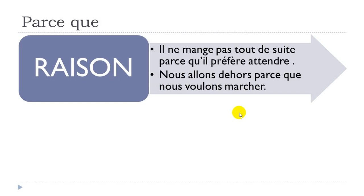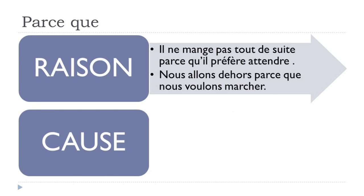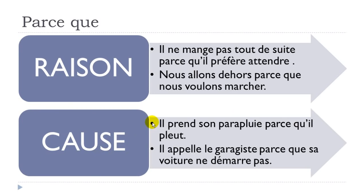The second option for using 'parce que' is when you want to introduce the cause. Example: 'il prend son parapluie' — 'parapluie' means umbrella, 'prendre' is to take, 'son' means his, so he's taking his umbrella. 'Parce qu'il pleut' — 'pleuvoir' means to rain, 'il pleut' means it rains. So: 'il prend son parapluie parce qu'il pleut.'